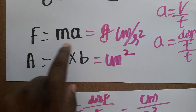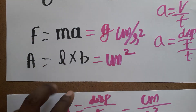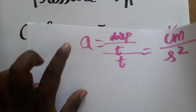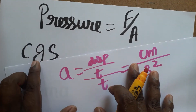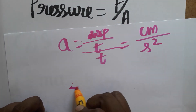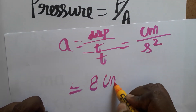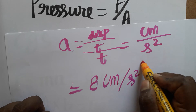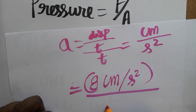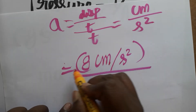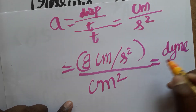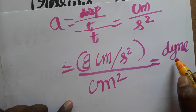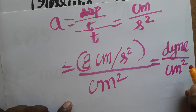So force is gram times centimeter per second squared, and area is centimeter squared. The pressure unit in the CGS system: force divided by area — gram centimeter per second squared divided by centimeter squared. This gram centimeter per second squared can be called a dyne, which is the unit of force in the CGS system.